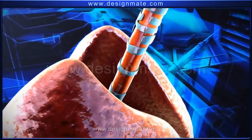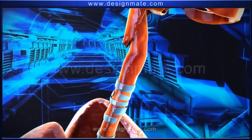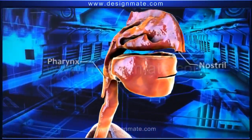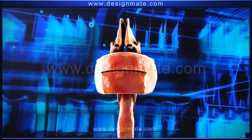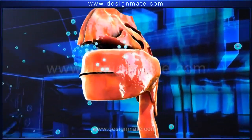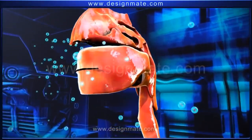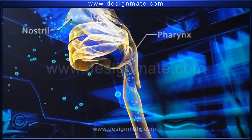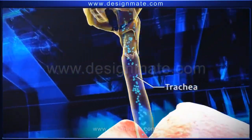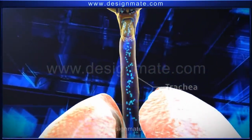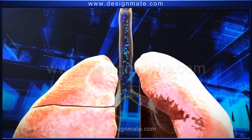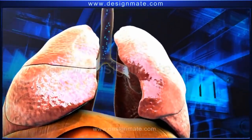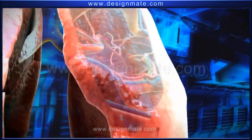The trachea has incomplete C-shaped rings of cartilage, which prevent the tracheal wall from collapsing. The trachea leads into the pharynx, which is connected to the nostrils. As we breathe in air, the oxygen molecules enter the nostrils and travel downwards through the pharynx and trachea.